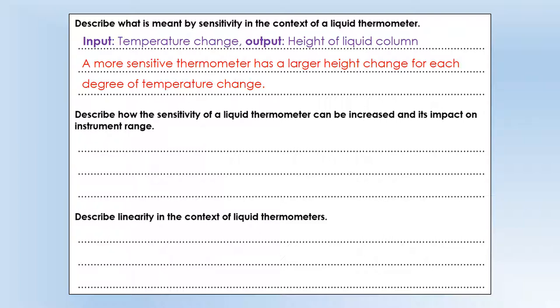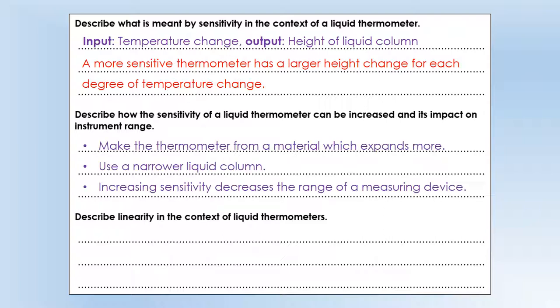So how can we actually change the sensitivity of a liquid thermometer? Well there's two ways of doing it. We can make the thermometer from a material which expands more. So each different liquid will expand by different amounts when you change its temperature by one degree. So we can pick one which has a larger expansion. Or we can use a narrower liquid column. If we make the liquid column narrower you'll have the same volume change when you change temperature, but that will give you a larger height change.